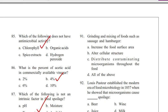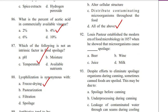Question 91. Grinding and mixing of foods such as sausage and hamburger: A. Increases the food surface area, B. Alters cellular structure, C. Distributes contaminating microorganisms throughout the food, D. All of the above. Answer: D. All of the above.